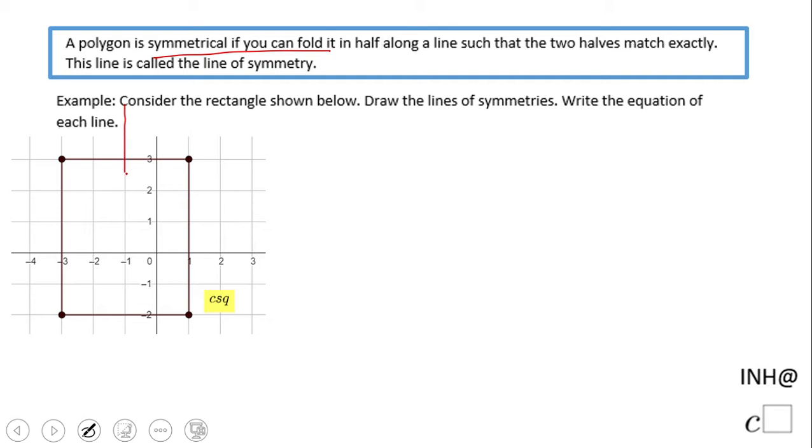It cuts this rectangle in half, and you have two congruent, equal pieces. What is the equation of that line? This is one unit to the left, so it's going to be x equals negative one. It's a vertical line. Is that the only one?